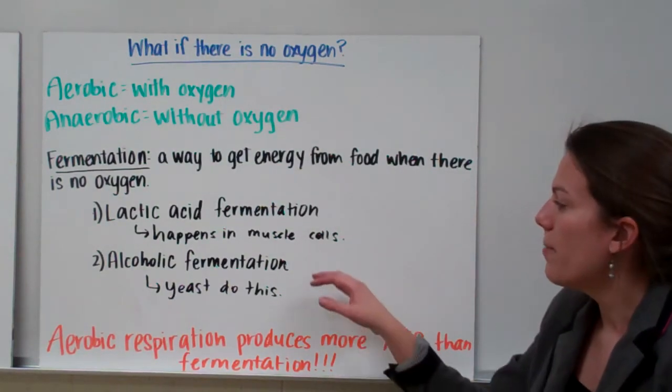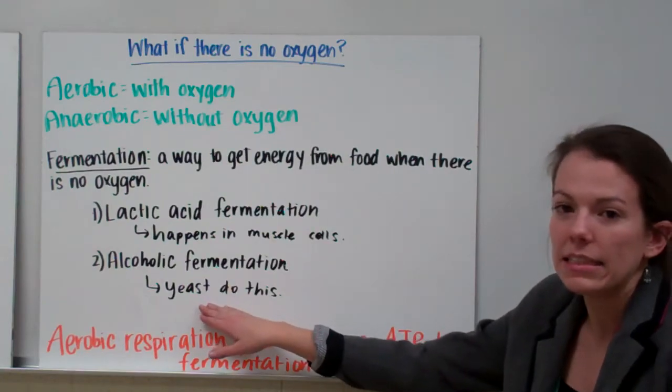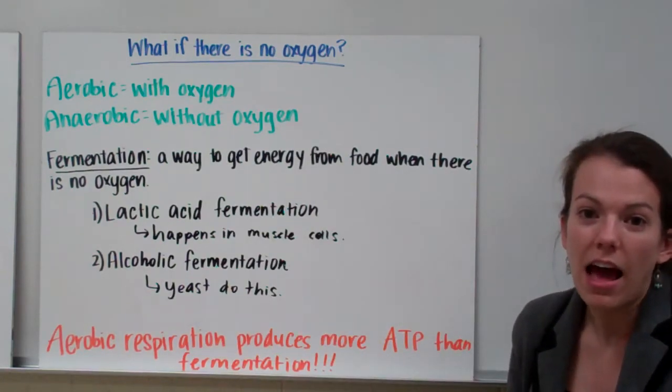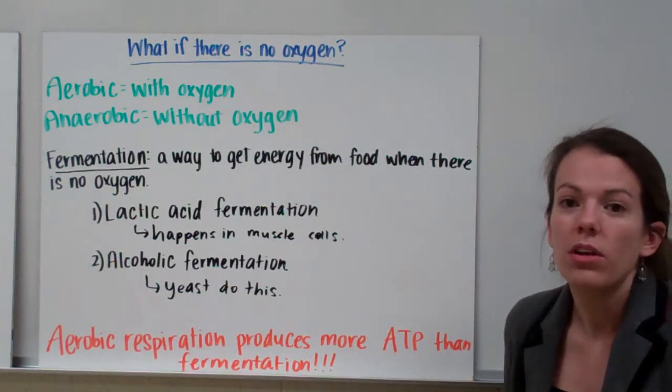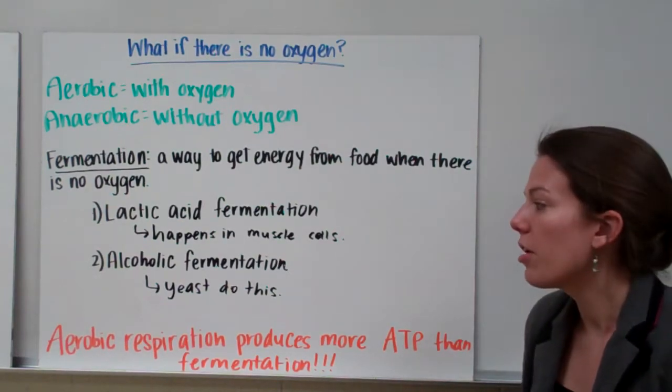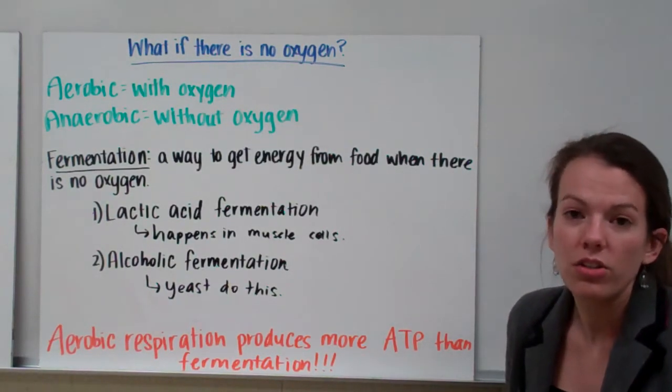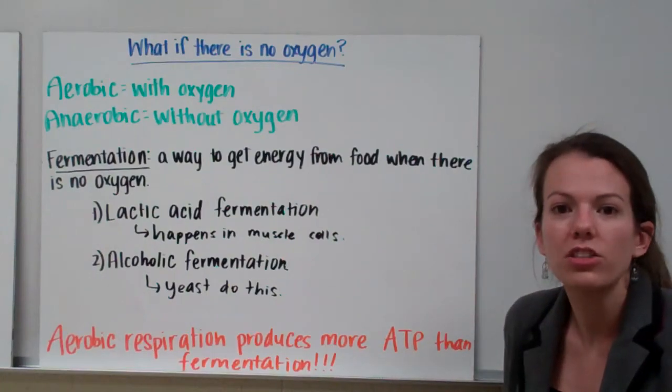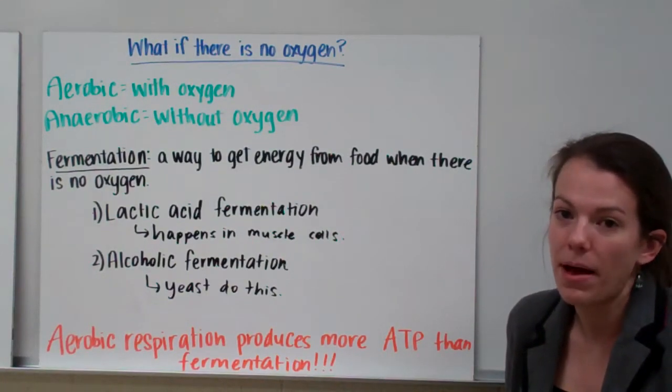Alcoholic fermentation is something that happens in yeast. If you've ever heard of alcohol or people drinking alcohol, we use yeast to break down sugars and other materials. Not only do the yeast get energy from that sugar, but they also release alcohol as a byproduct.